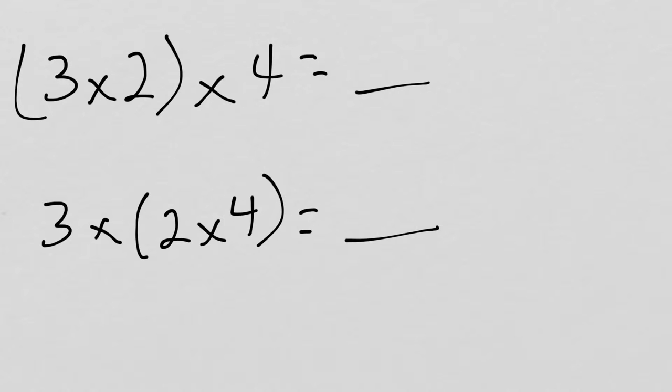Let's take a look and see what happens. Step by step here, I start with the parentheses. 3 times 2 is 6, times 4. I count by 6 is 4 times, 6, 12, 18, 24.